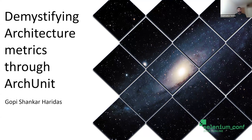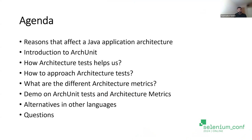I'm very happy to be here and happy to see you all — although I can't see you all, at least I can interact with you through questions. The topic is demystifying architecture metrics through ArchUnit. I'd like to give a quick disclaimer: this is more related to Java coding architecture and Java microservices, as ArchUnit is more focused on Java architecture. Please drop in your questions — I'd like to take questions in between, and no answer is wrong. I'd like to keep the session as interactive as possible.